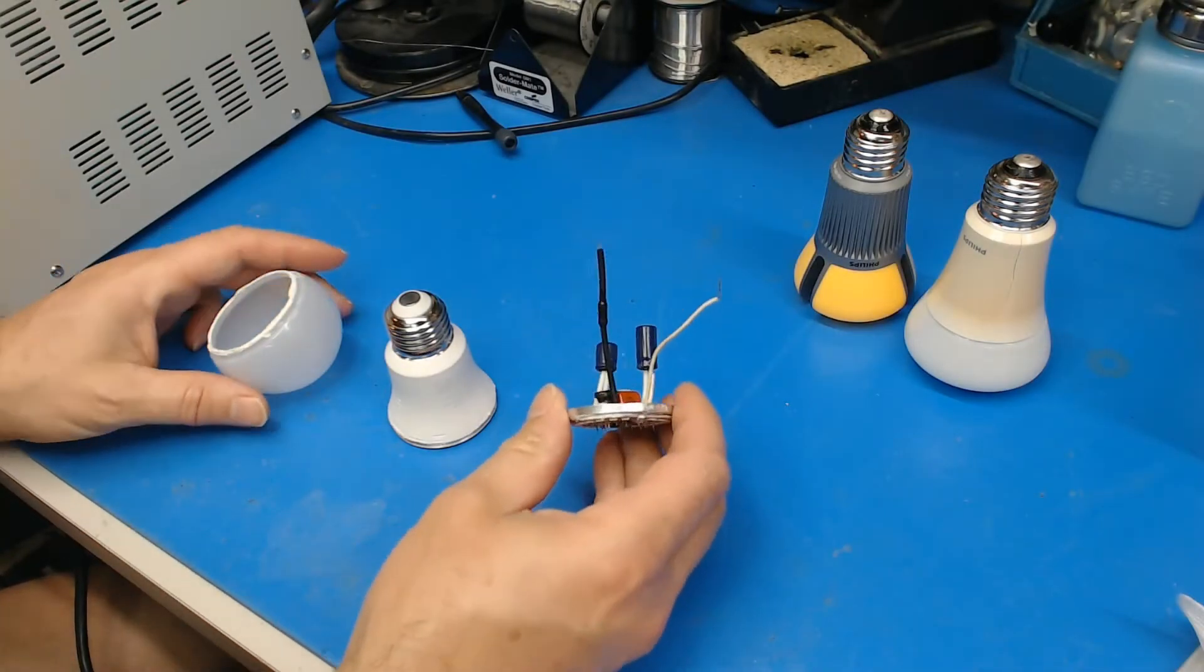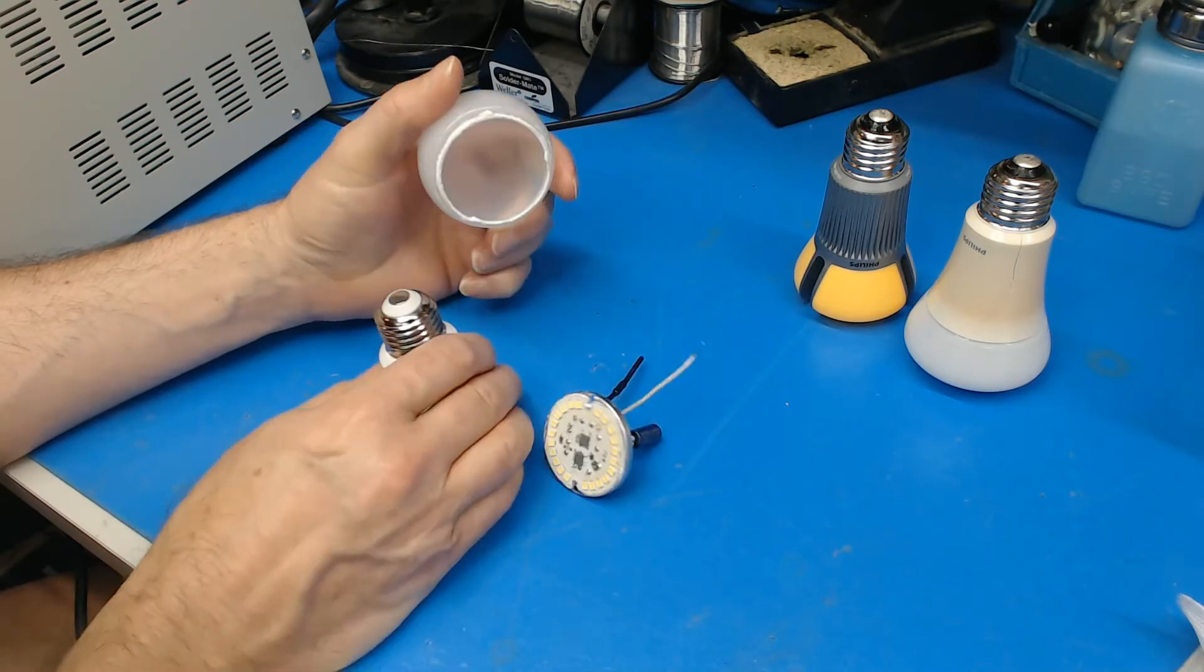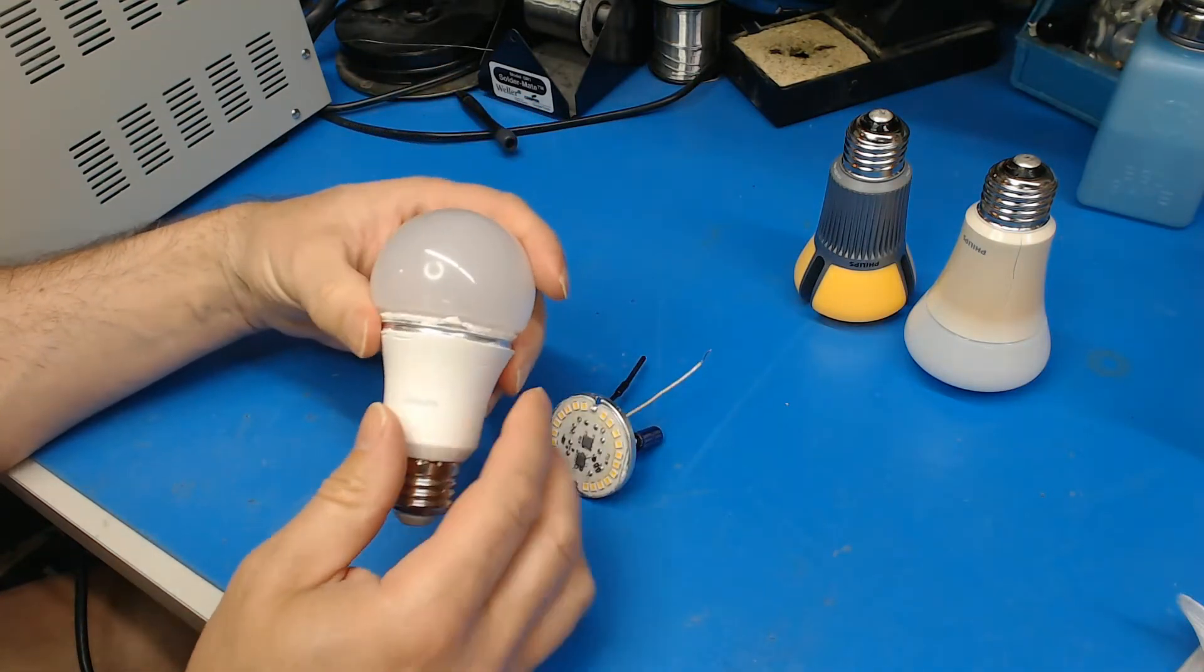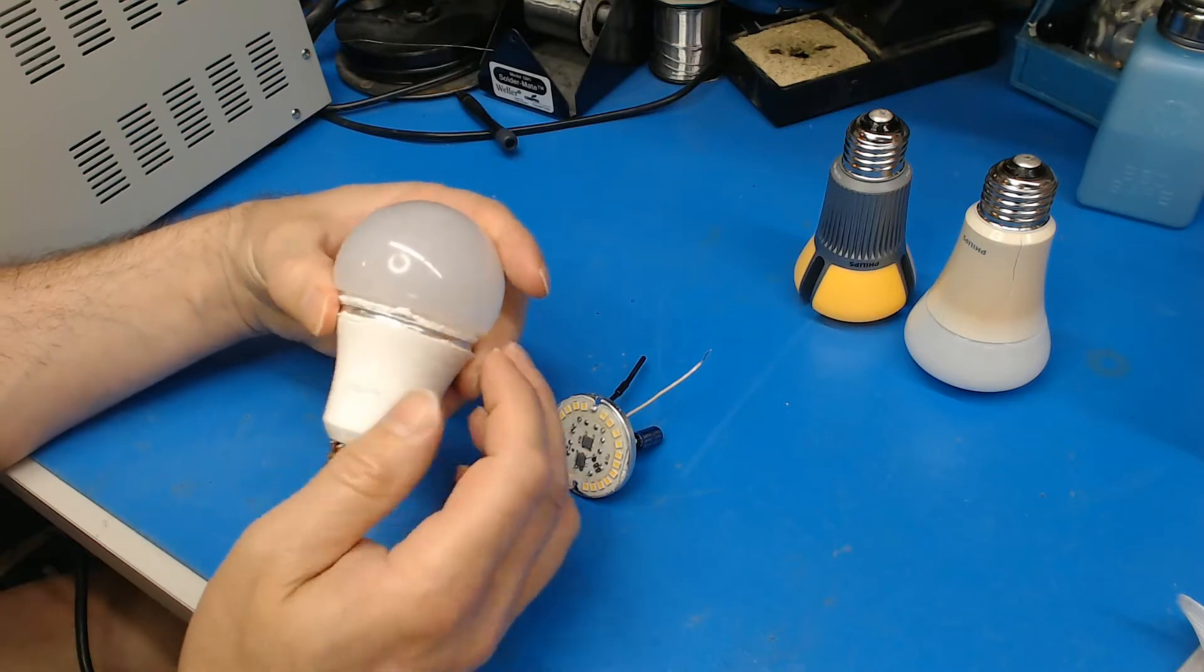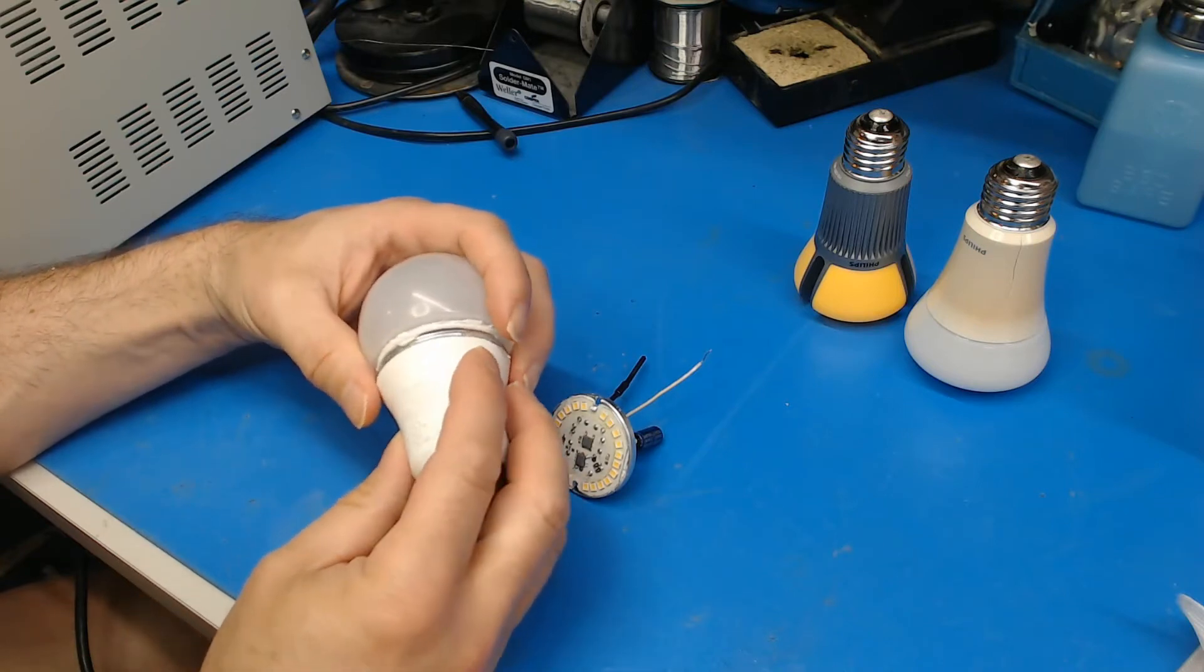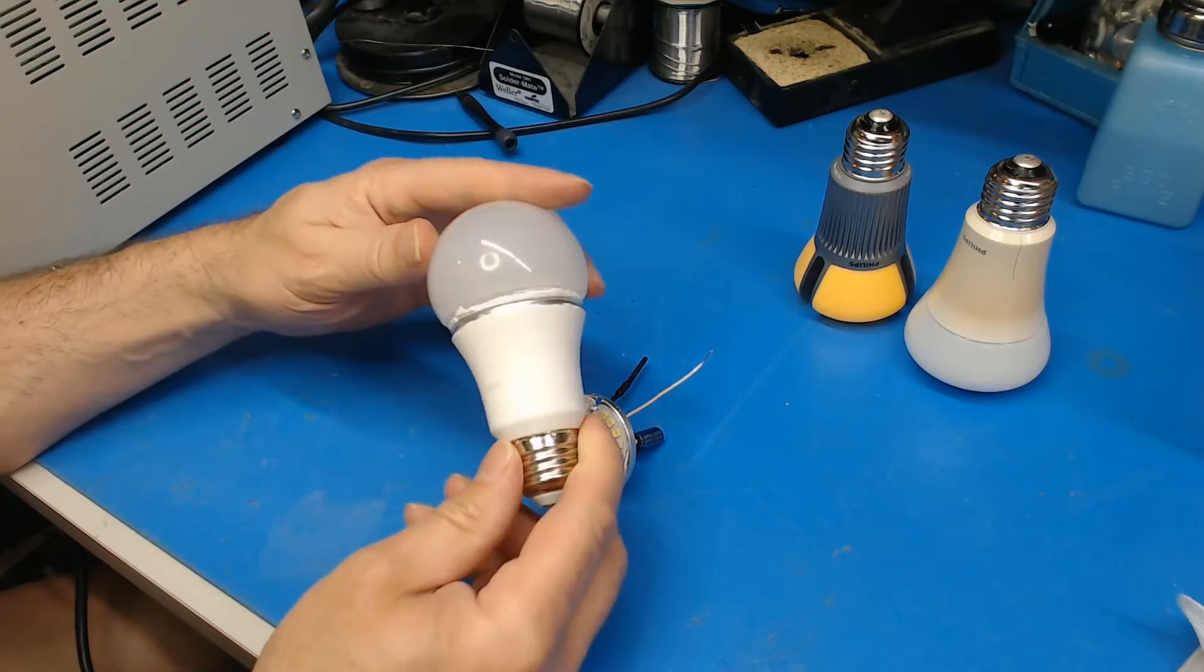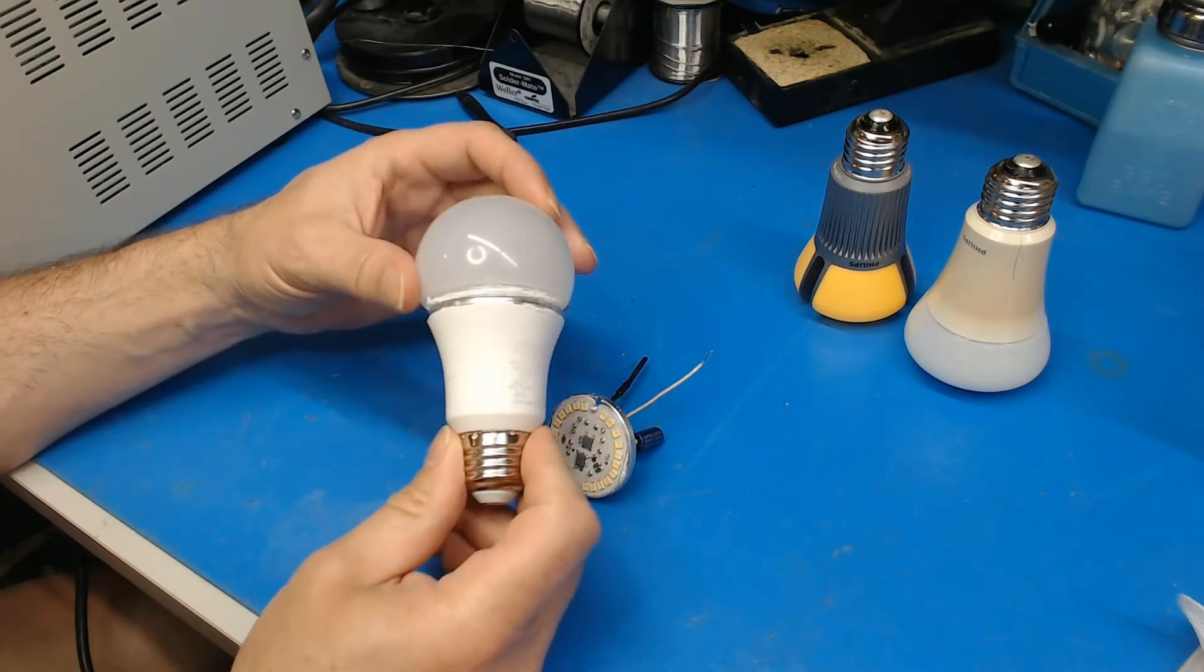So I've got this apart now and what I ended up doing was taking a hacksaw and just cutting around the outer flange or overmolding. So that was actually pretty easy to take apart.